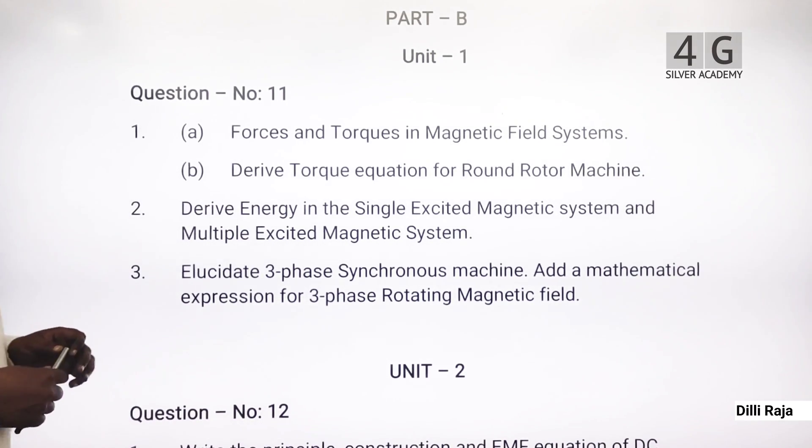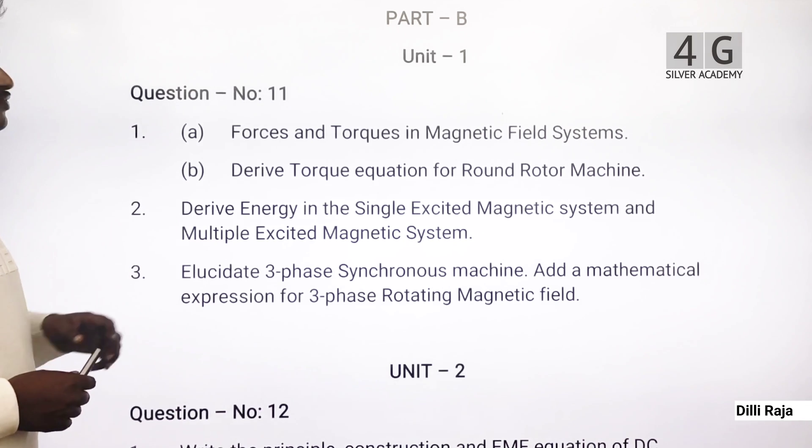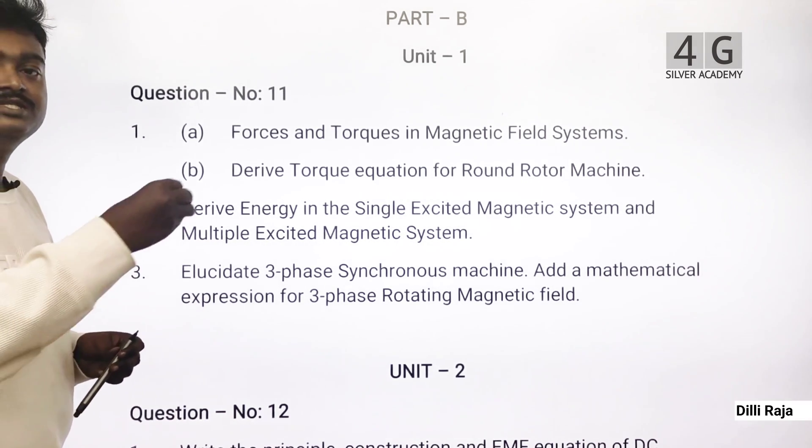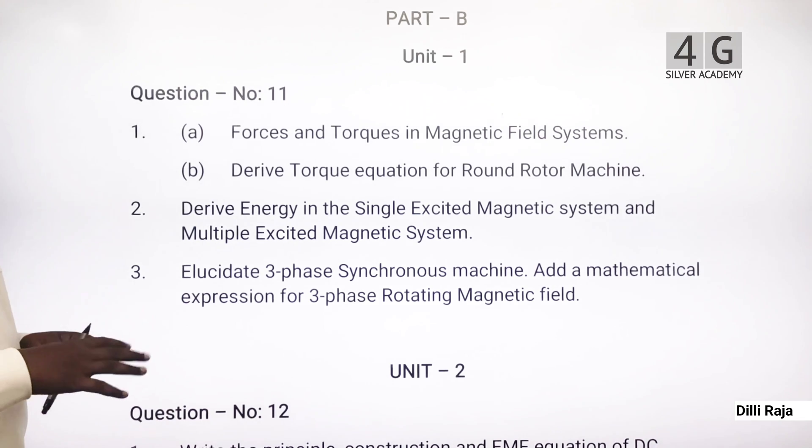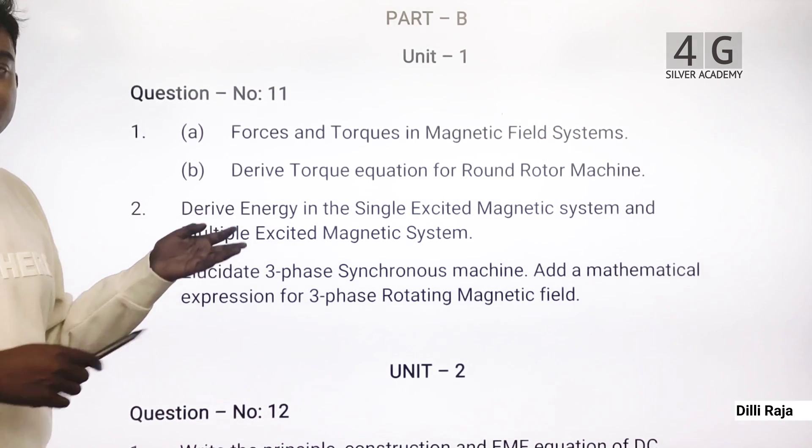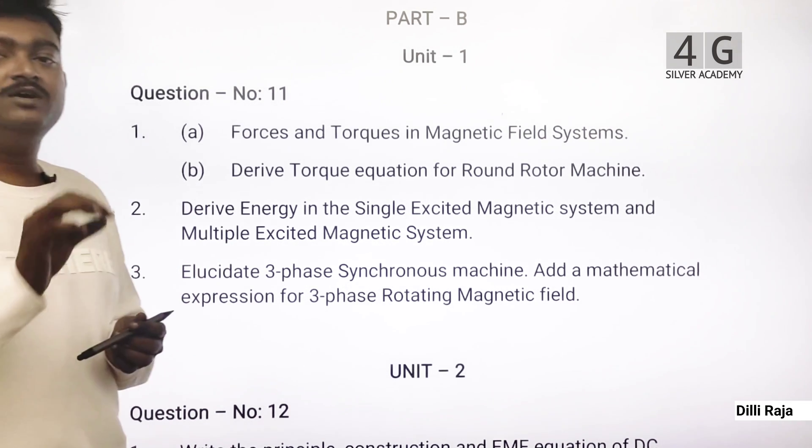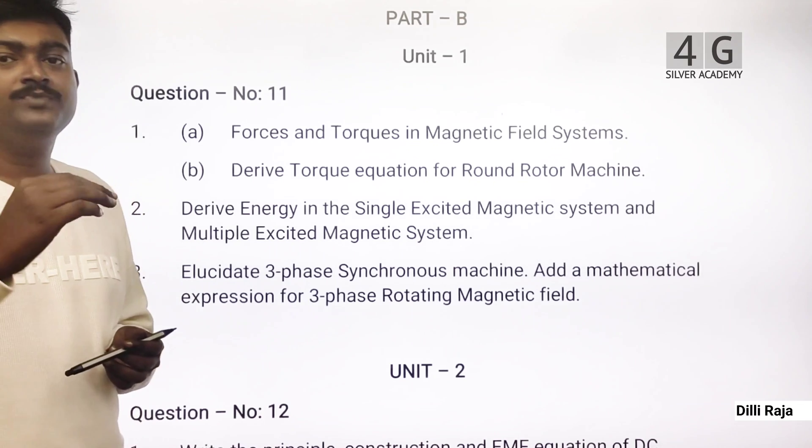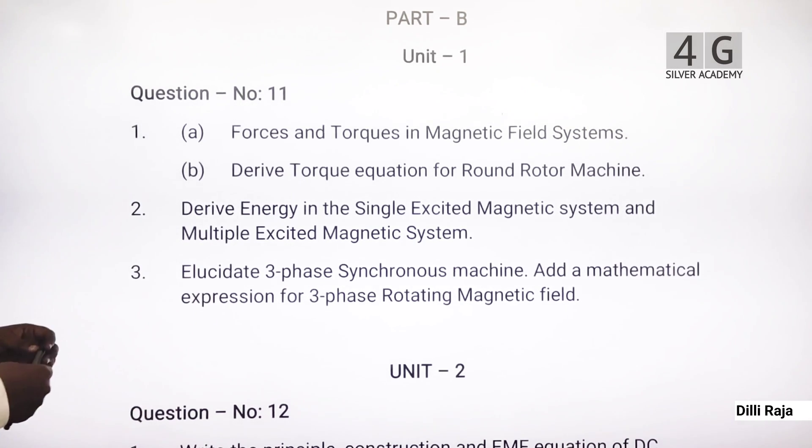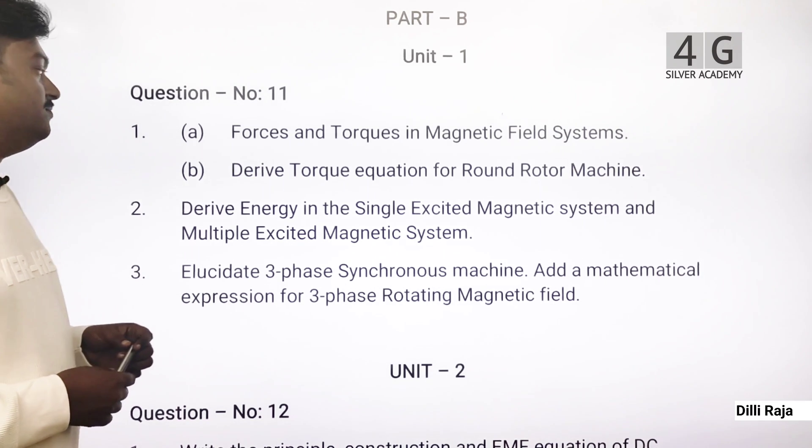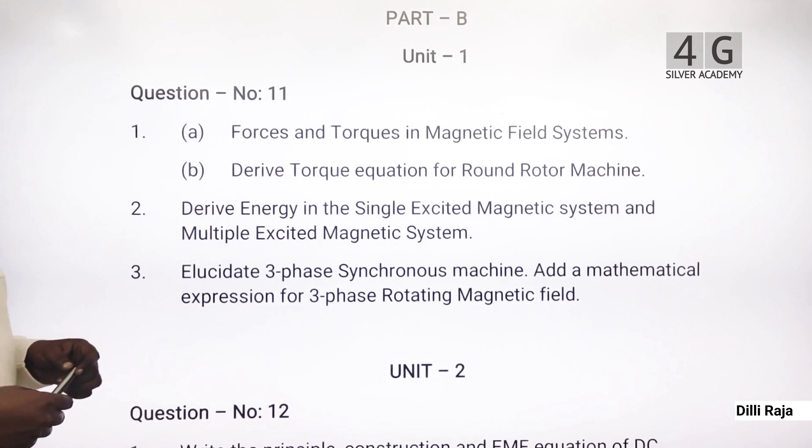For Unit 1, we have Question Number 11. There are multiple questions in total. You need to practice all of them. I'll provide explanation videos in the description. The exam will cover these topics. First: Forces and Torques in Magnetic Field Systems. Derive Torque equation for Round Rotor Machine.